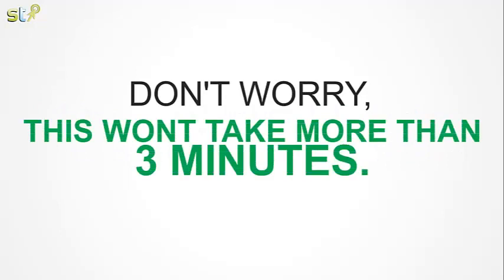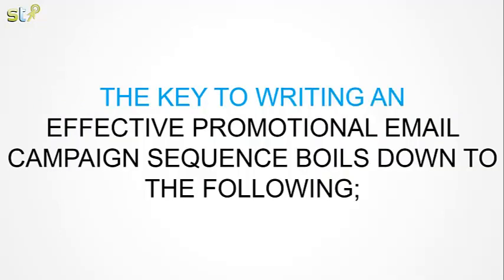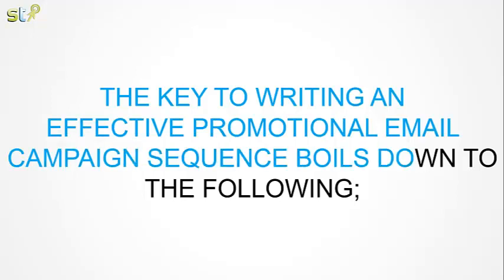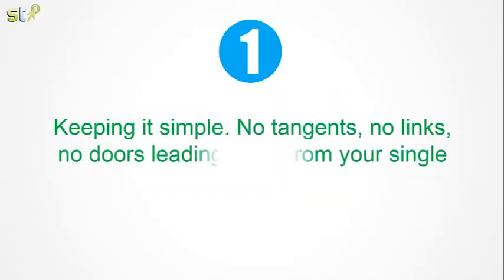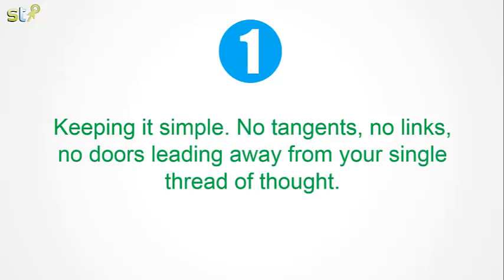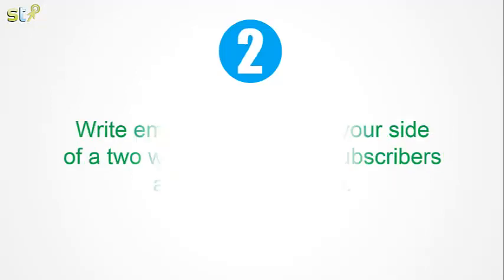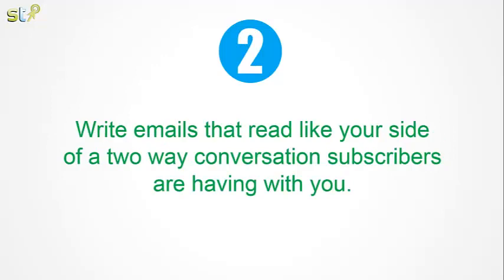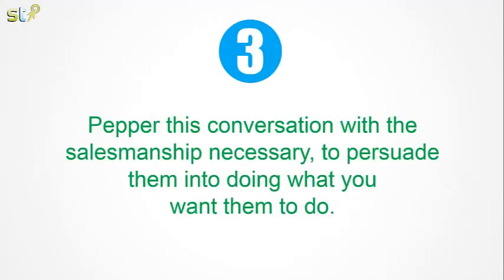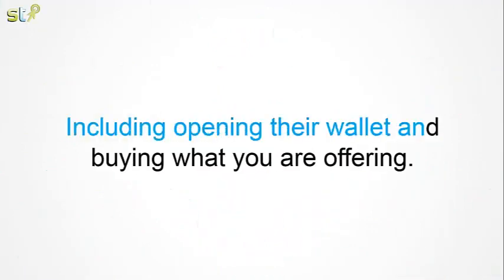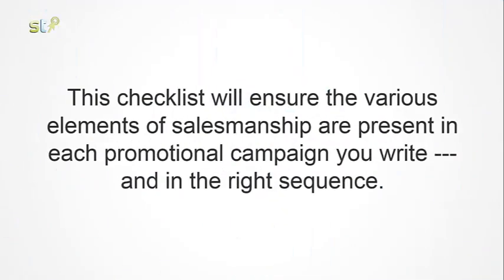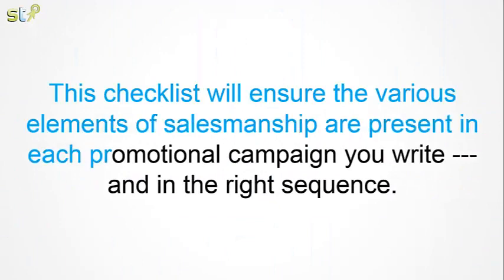Don't worry, this won't take more than three minutes. The key to writing an effective promotional email campaign sequence boils down to the following. One, keeping it simple — no tangents, no links, no doors leading away from your single thread of thought. Two, write emails that read like your side of a two-way conversation subscribers are having with you. Three, pepper that conversation with the salesmanship necessary to persuade them into doing what you want them to do, including opening their wallet and buying what you are offering. This checklist will ensure the various elements of salesmanship are present in each promotional campaign you write and in the right sequence.